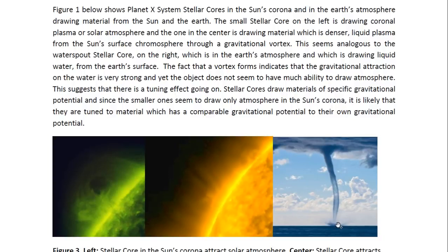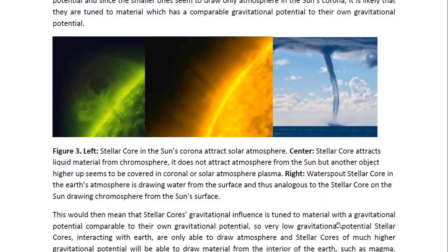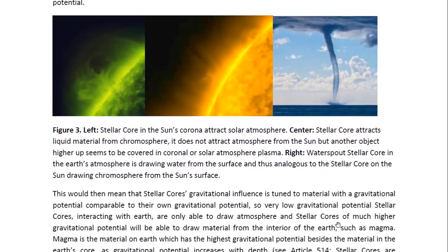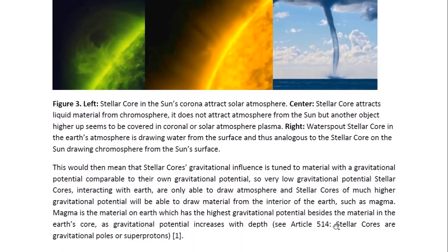The fact that a vortex forms indicates that the gravitational attraction on the water is very strong, and yet the object does not seem to have much ability to draw atmosphere. This suggests that there is a tuning effect going on. Stellar cores draw material of specific gravitational potential, and since the smaller ones seem to draw only atmosphere in the Sun's corona, it is likely that they are tuned to material which has a comparable gravitational potential to their own.